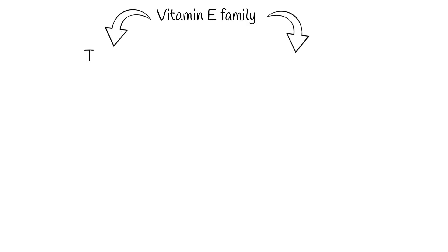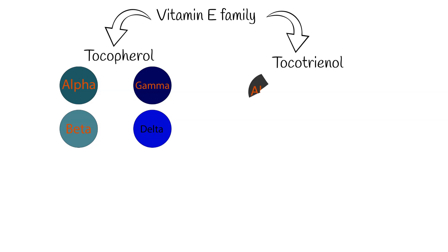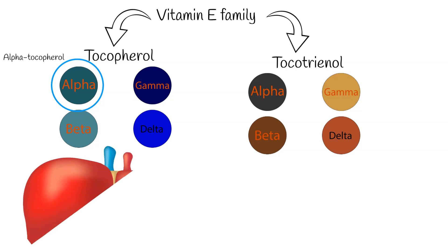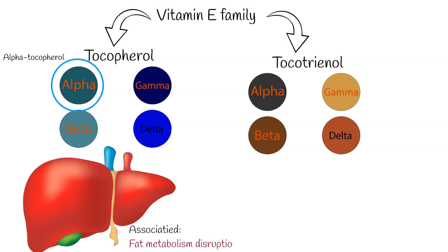Vitamin E comes in eight different forms, but only alpha-tocopherol is metabolized by the liver, while other forms are excreted directly without affecting human metabolism, so they are not interesting clinically. Vitamin E deficiency is extremely rare in humans. When it does occur, it is not isolated but associated with fat absorption or metabolism problems, because vitamin E is a fat-soluble vitamin and requires fat for its absorption.